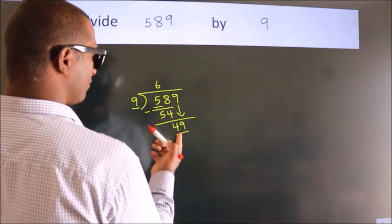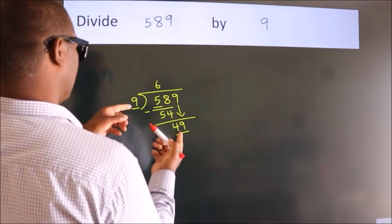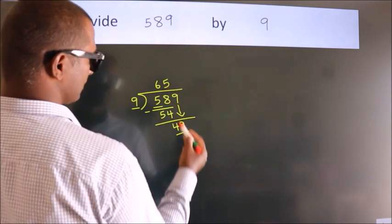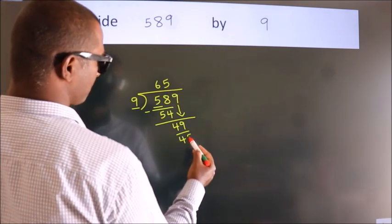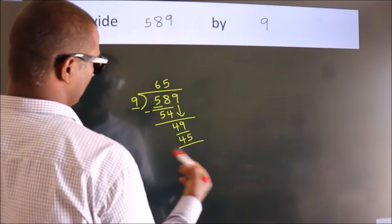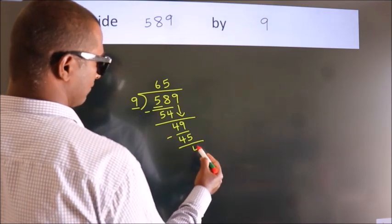A number close to 49 in the 9 table is 9 × 5 = 45. Now we subtract. We get 4.